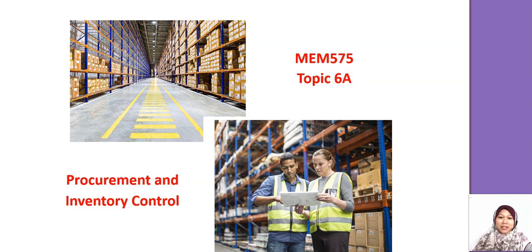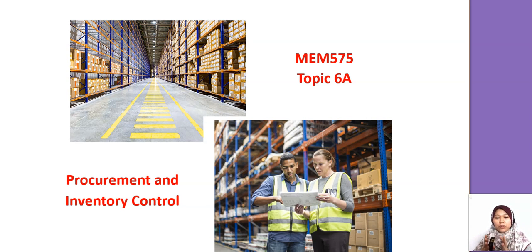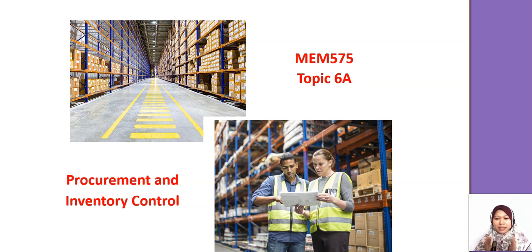Hi, Assalamualaikum. Today we're going to topic 6, in which we'll cover procurement and inventory control. For topic 6, I divided it into 3 parts: 6A we're going to learn on inventory, 6B we're going to look at the lean version, and 6C we're going to look at the supply chain. For this week, I will do topic 6A first.